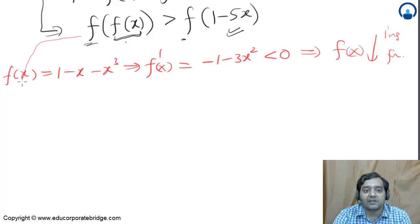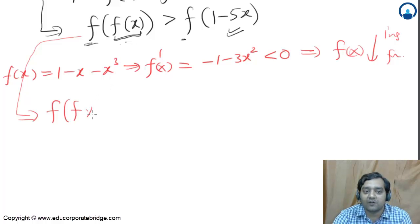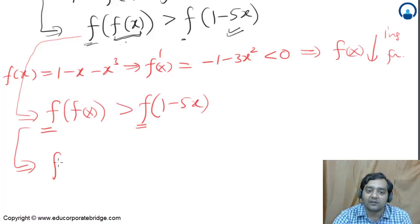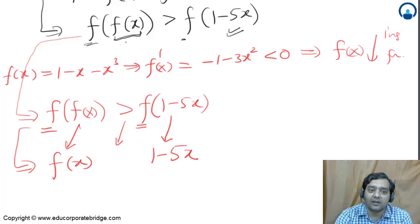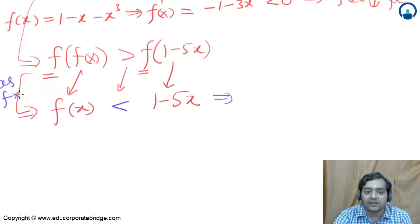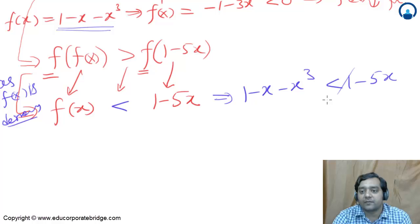Since f is decreasing, if f(alpha) > f(beta), then removing f reverses the inequality sign. So f(f(x)) > f(1 - 5x) becomes f(x) < (1 - 5x) after removing the outer f. The inequality sign flips from greater than to less than, since f is decreasing. Now solve this.